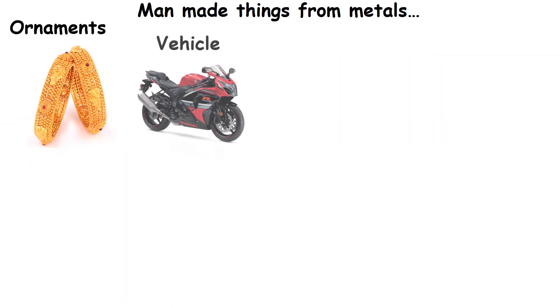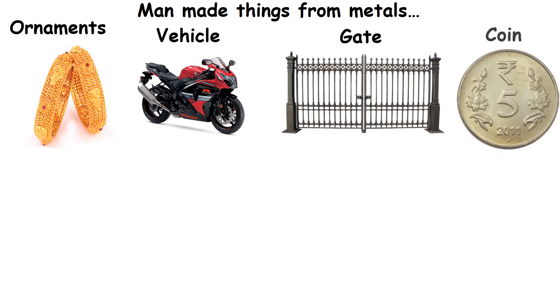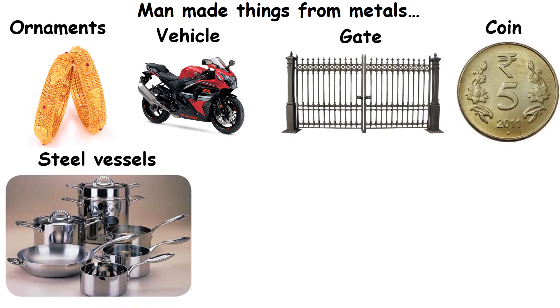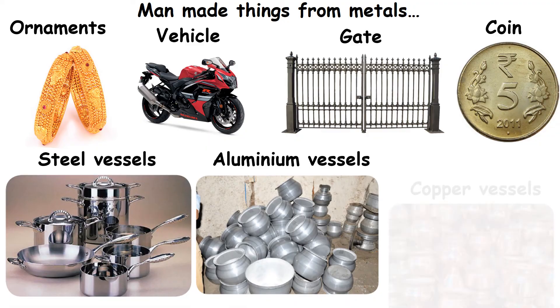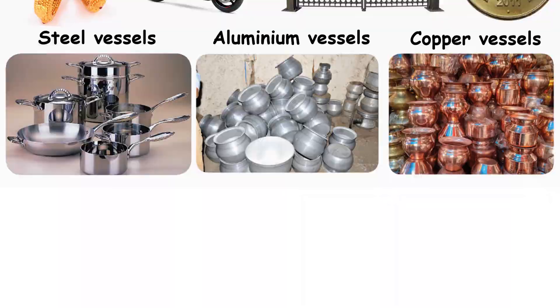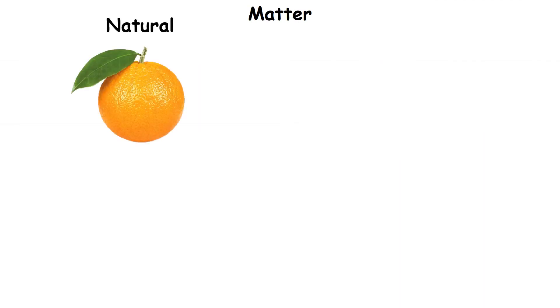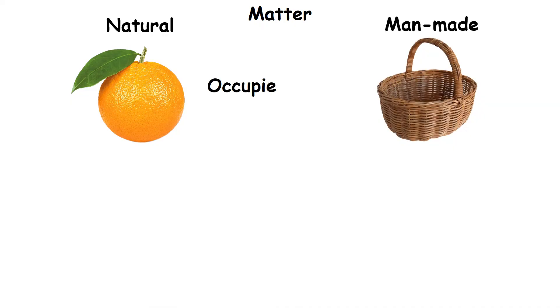Man-made things from metals are ornaments, vehicles, gates, coins and cooking vessels like steel vessels, aluminium vessels and copper vessels.